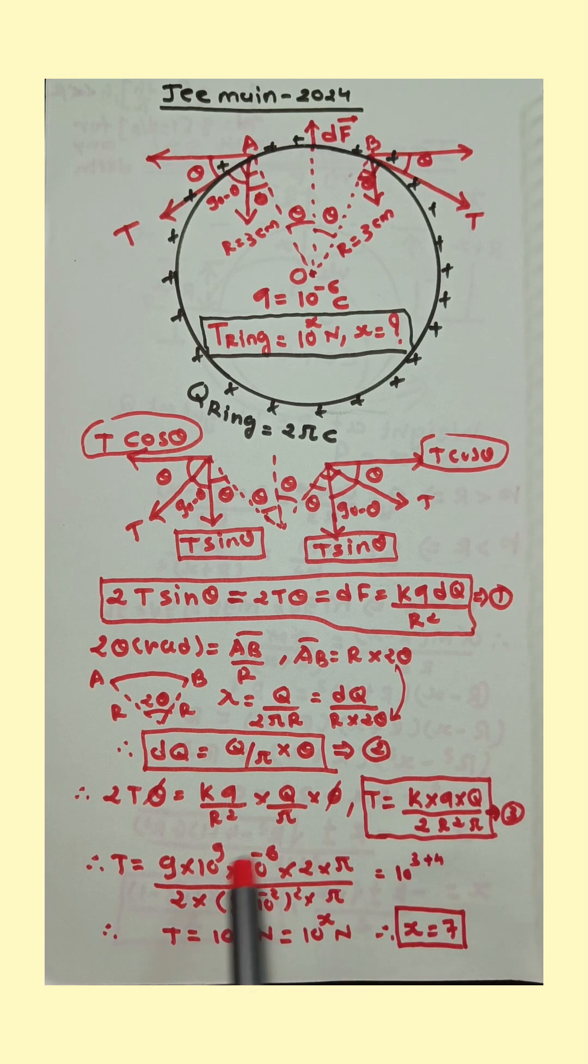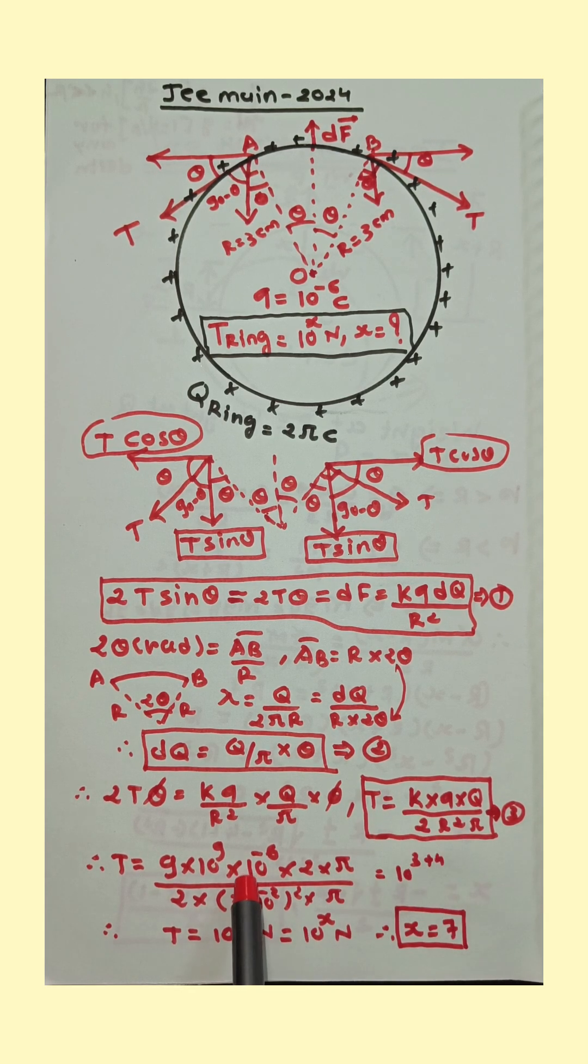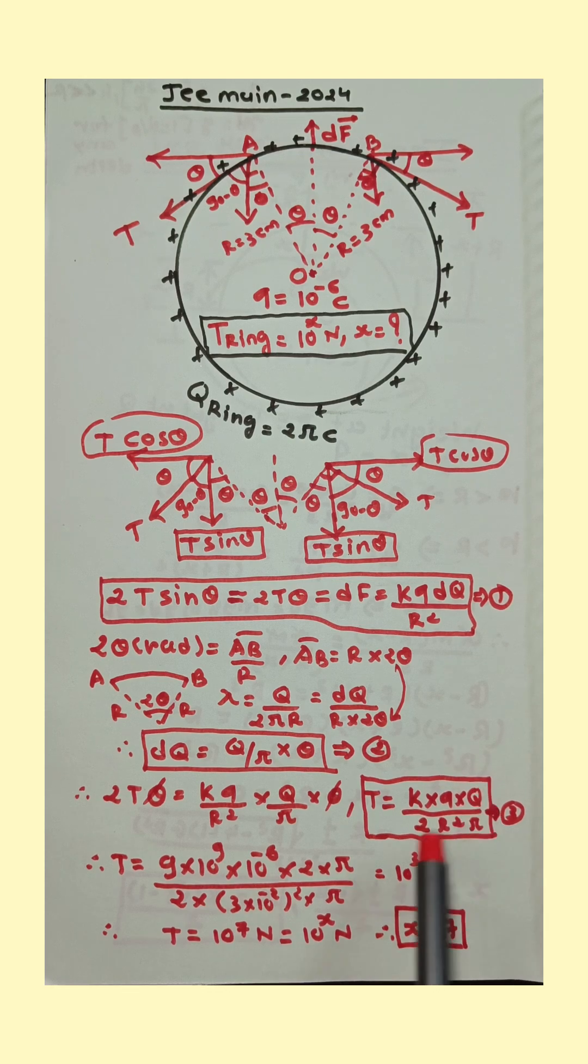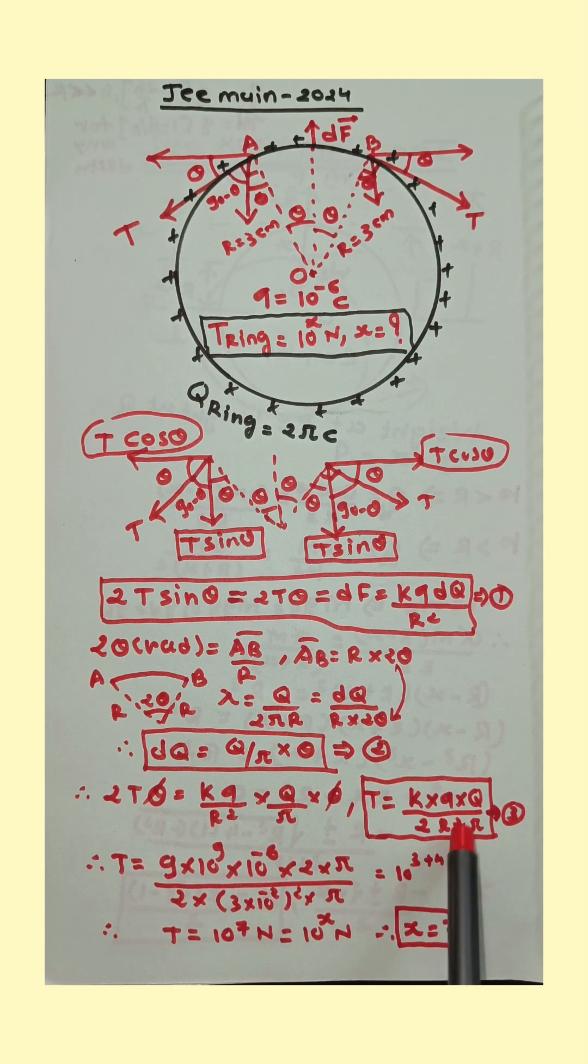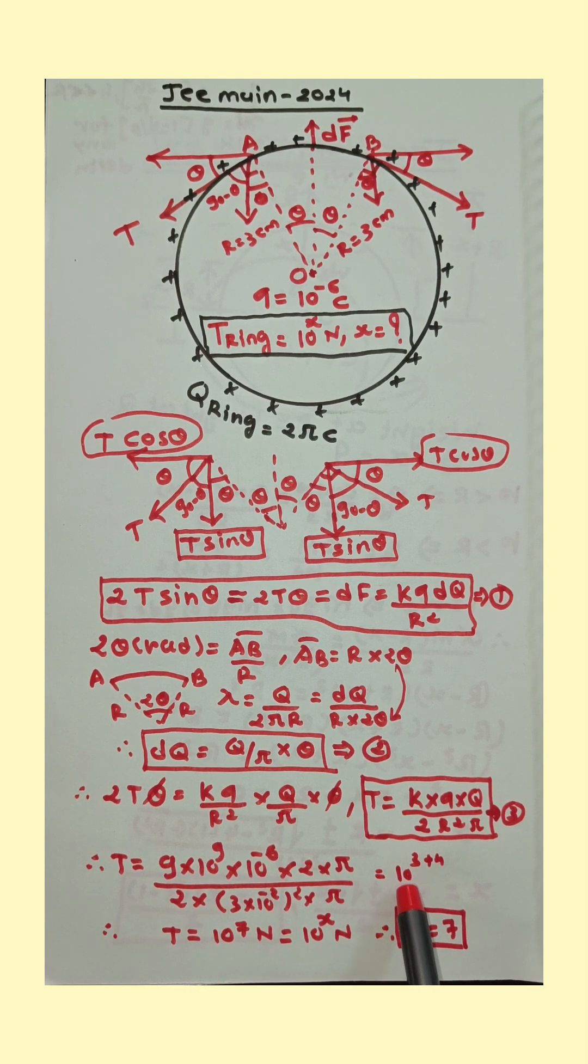Now substitute value k is 9×10 raised to 9. Small q is 10 raised to minus 6. Total charge is 2π upon 2. R is 3×10 raised to minus 2 meter whole square into π. 2π, 2π is cancelled. And by simplification it is 10 raised to 3 plus 4. So 10 raised to 7 newton.